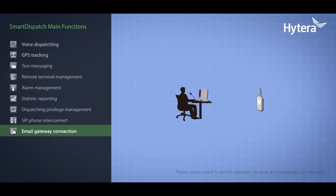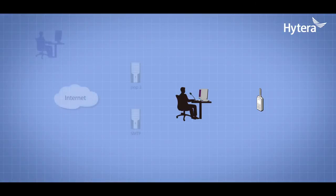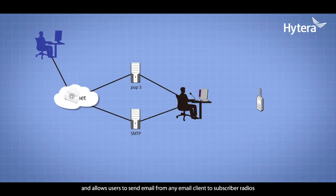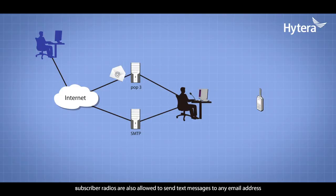Email Gateway Connection: Smart Dispatch server integrates with SMTP and POP3 server and allows users to send email from any email client to subscriber radios. Subscriber radios are also allowed to send text messages to any email address.